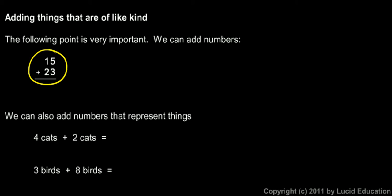You can add numbers like you have here. Fifteen plus twenty-three. You can probably do that in your head. We have an eight and a three. Fifteen plus twenty-three is thirty-eight. So we've added two numbers. You learned to do that a long time ago.